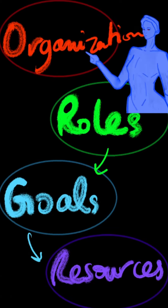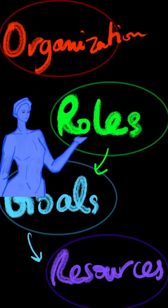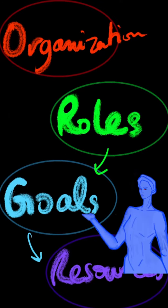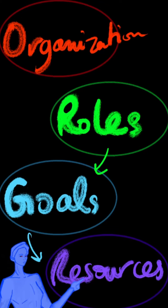Which organizations administrate your world? Every organization should have at least one role. This whole role would be displayed through the organization's goal, which most of the time will revolve around acquiring resources. You only need to define which resources are most desirable in your world.